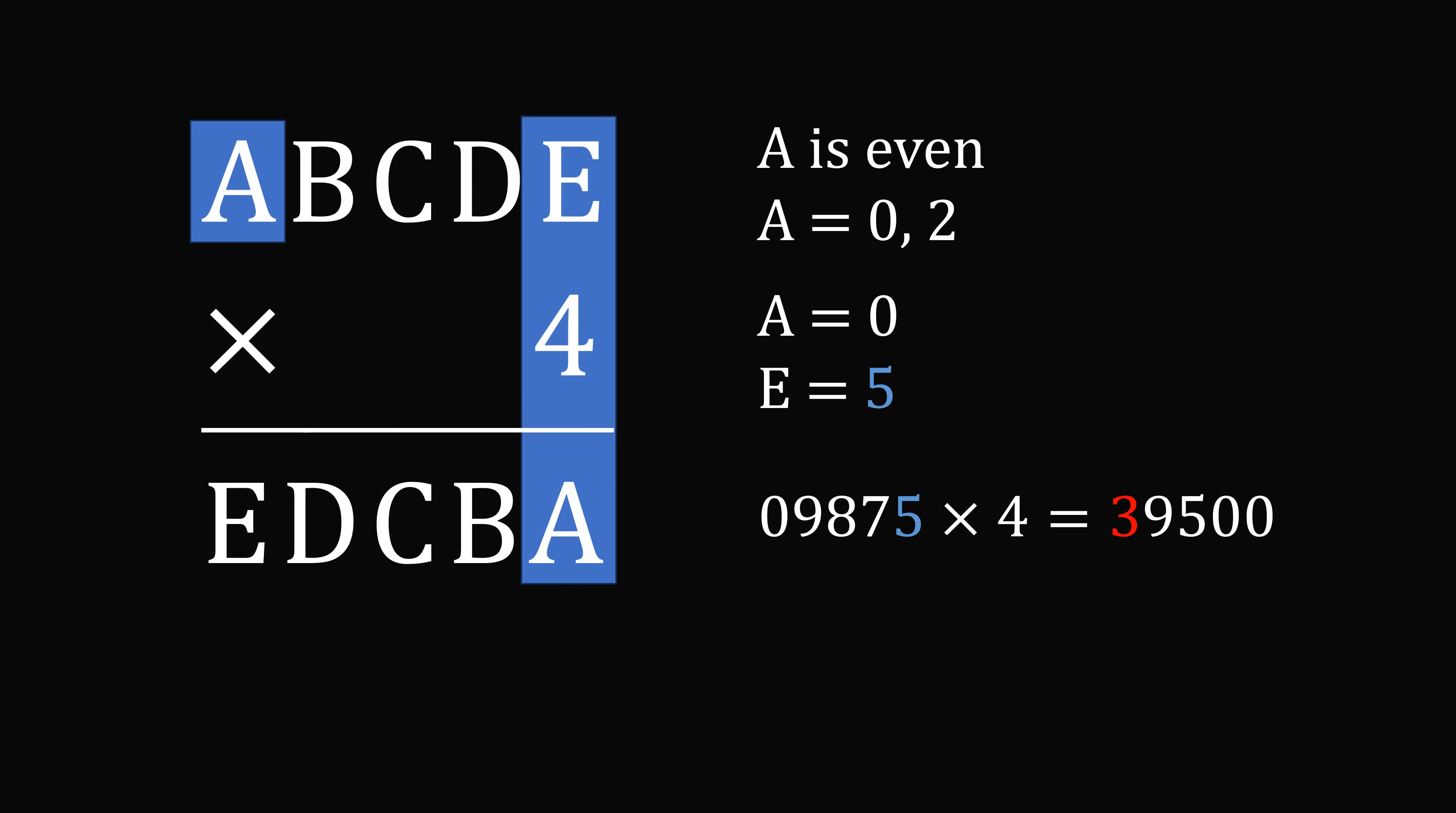The largest number we could have is 09875. Multiply that by 4, we get 39,500. But we would need the result to be at least 50,000 because E would be the first digit of the result. So we can't have E is equal to 5 and A is equal to 0. The result would be too small. So we can eliminate that case.